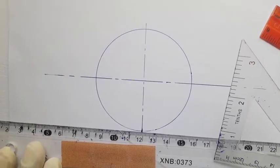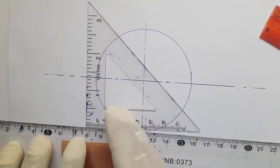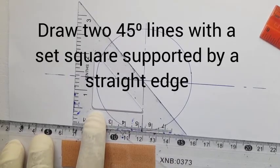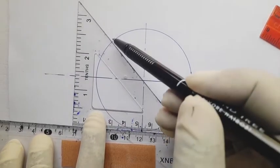Then you place your set square on top of it and you draw this line, draw this diameter here.